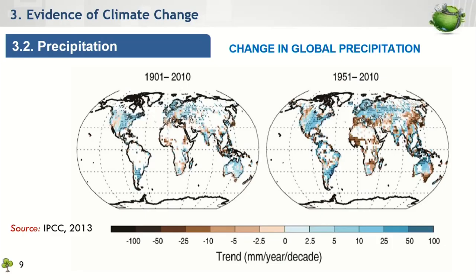Furthermore, aside from this significant spatial change, a widespread increase in heavy rain events has also been observed, even in places where the total amount of rainfall has decreased.